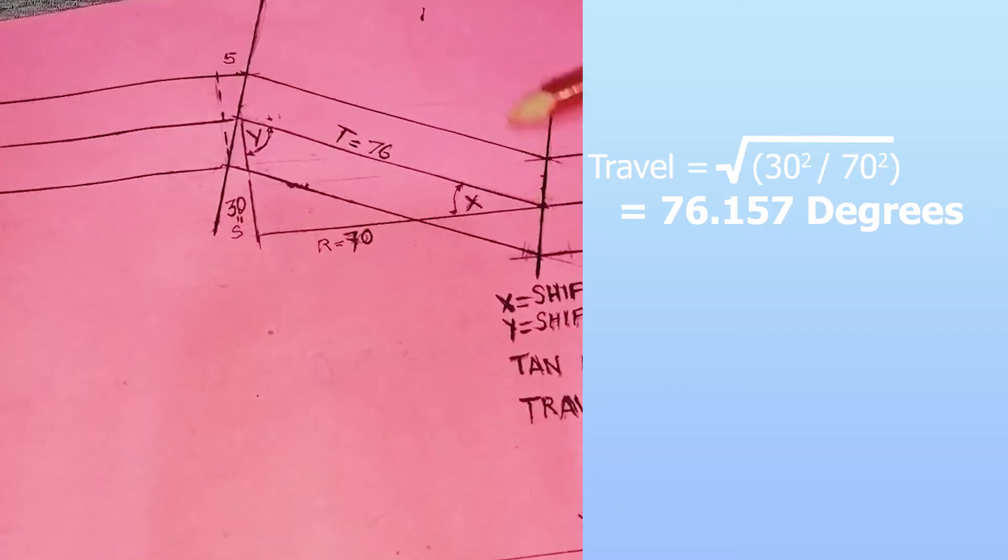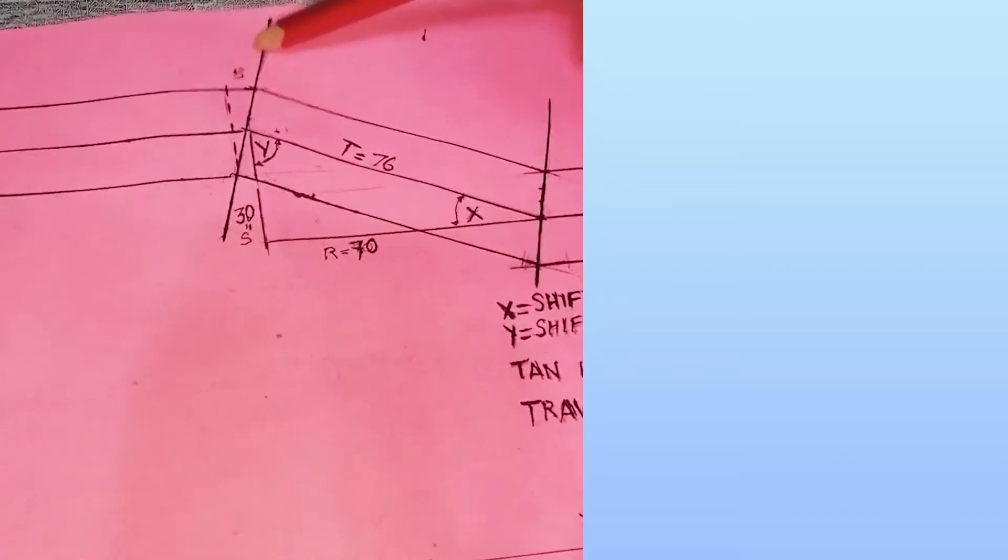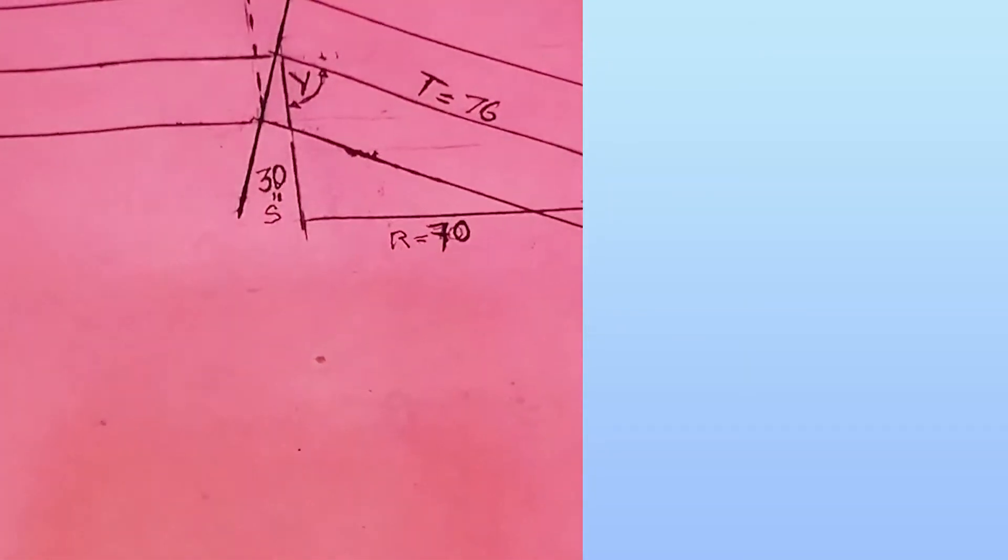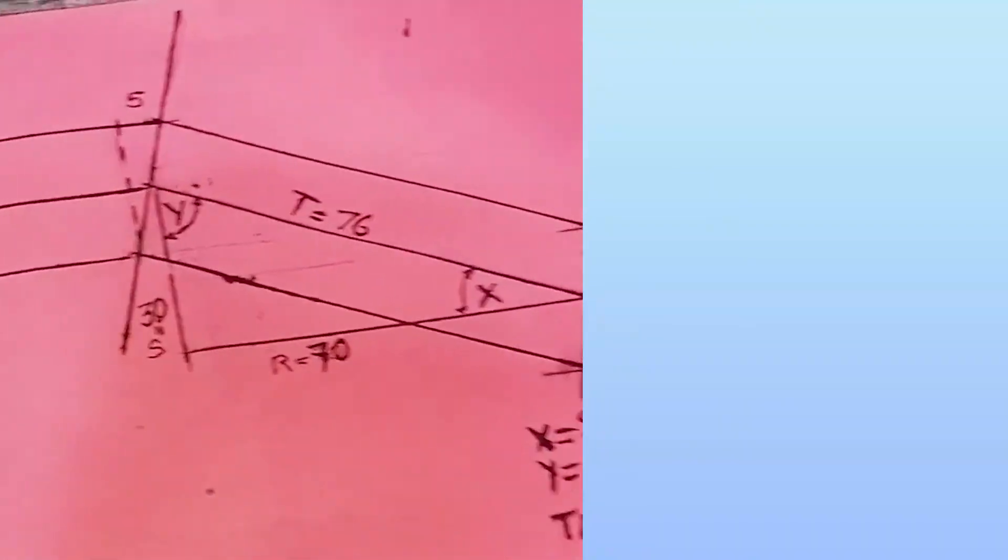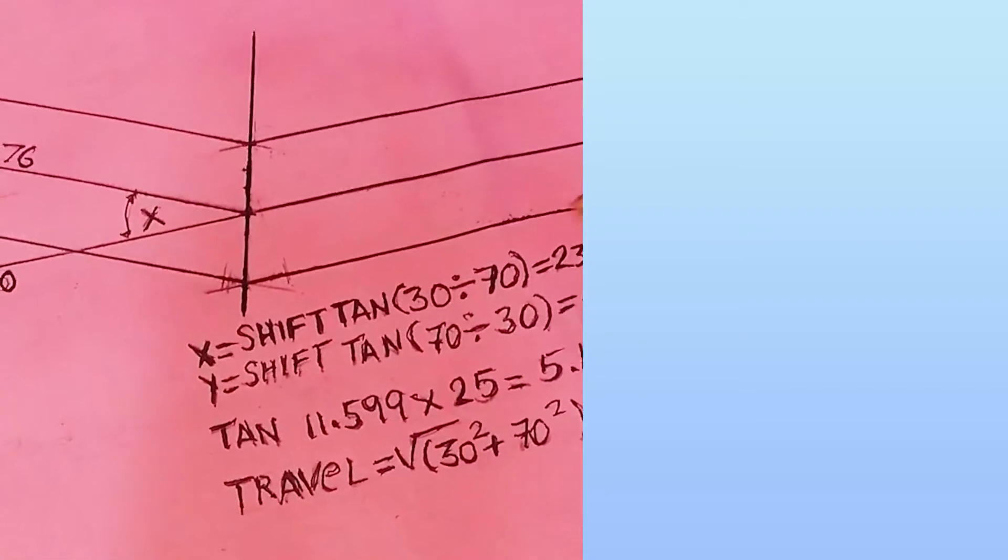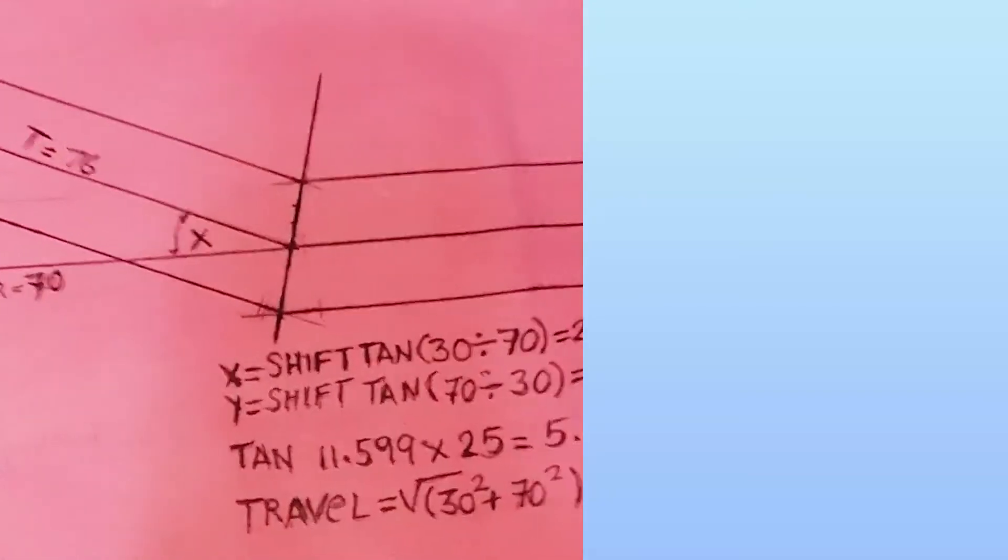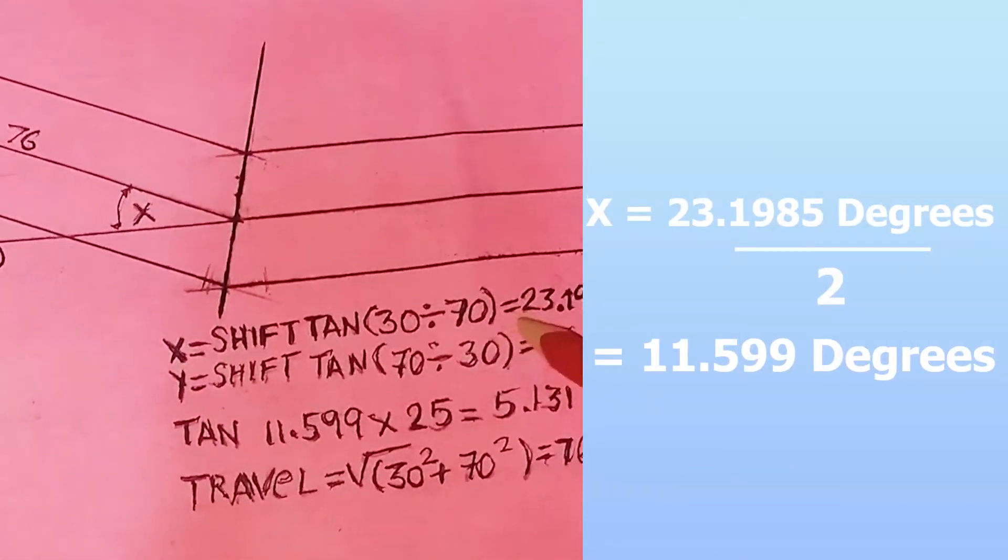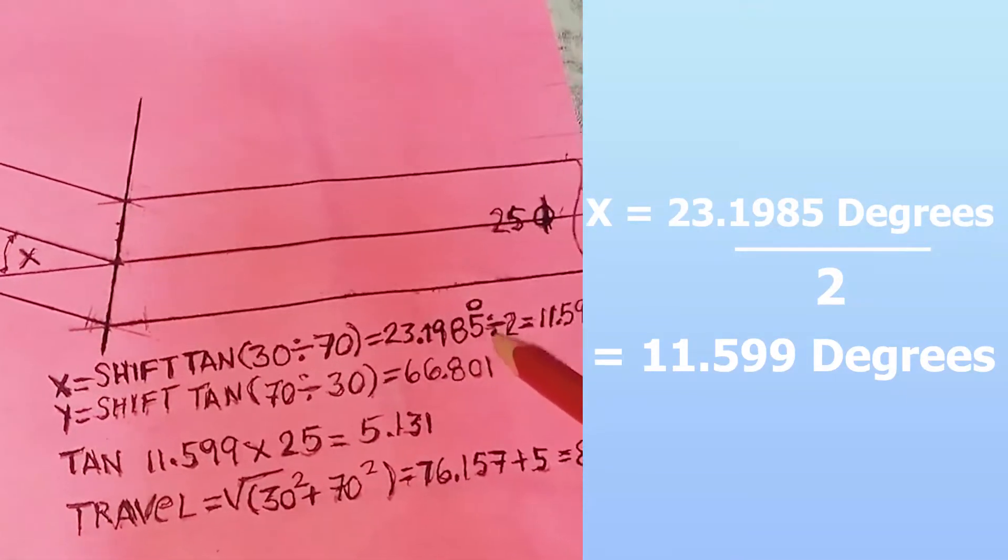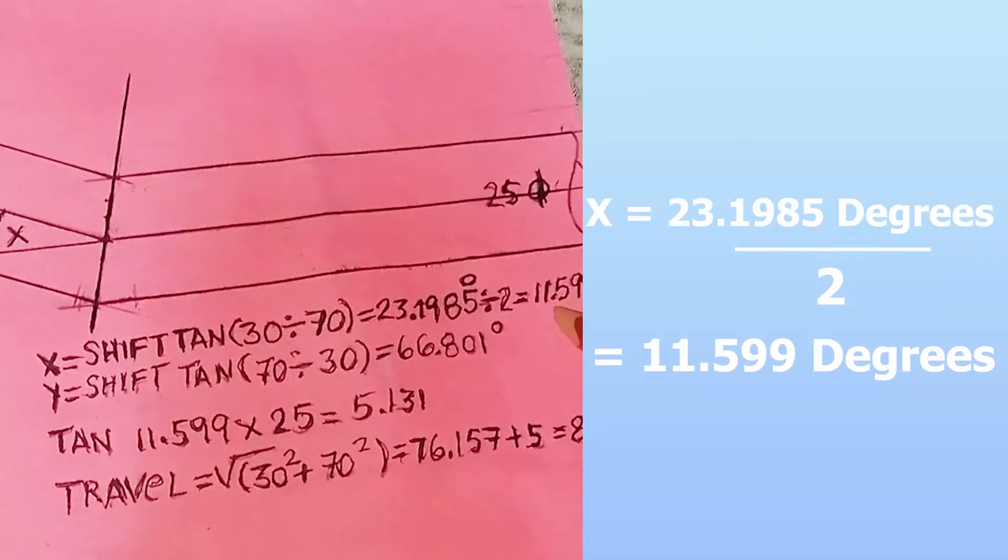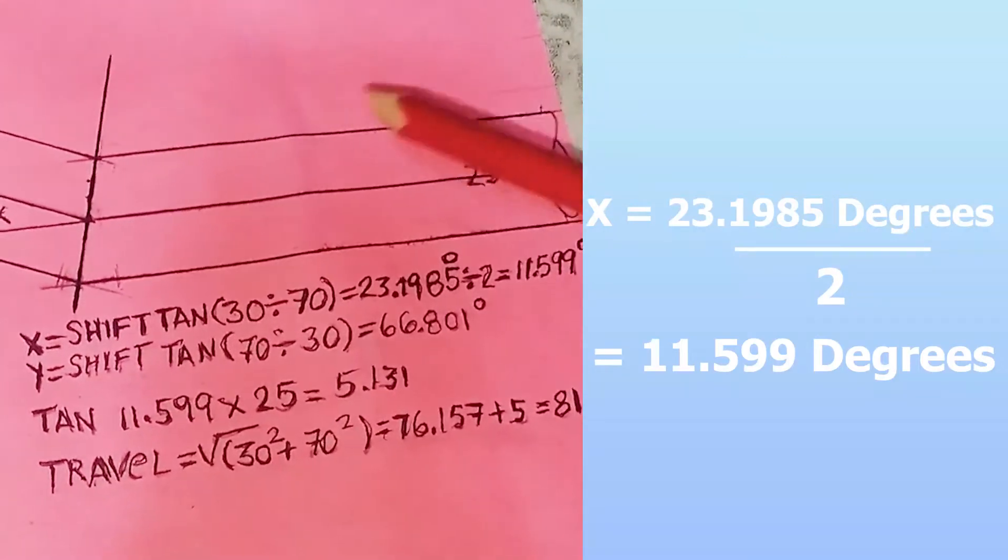Ngayon, kukunin natin yung ikakat dito ng imamiter dito, yung babawas natin dito. Yung layo nito, magmula rito hanggang dun. Yung degrees nitong X, di-divide mo sa 2. Ito yun, 23.1985 degrees divided by 2 equals 11.599 degrees.